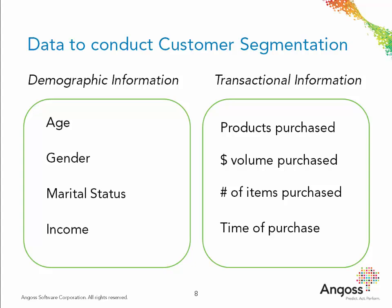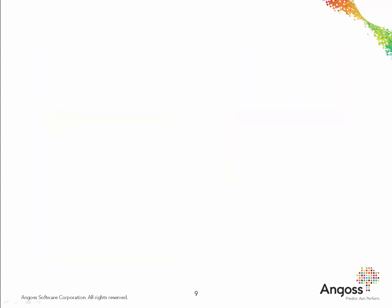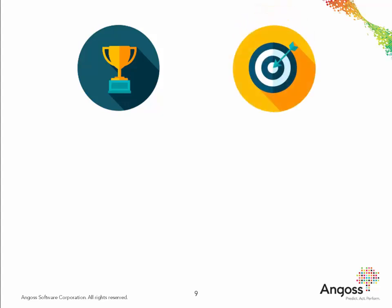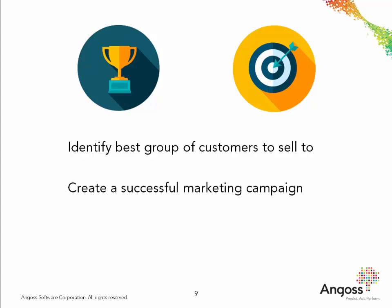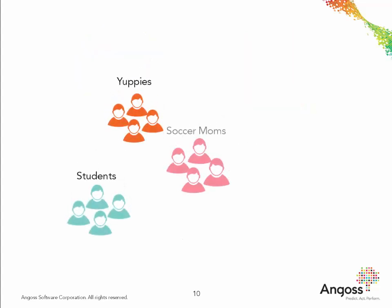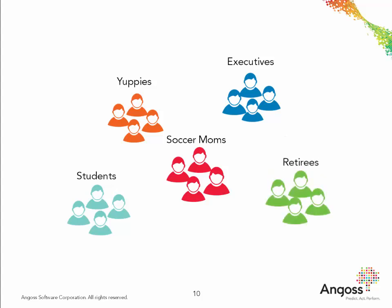Cluster models use these variables to create segments containing customers with similar attributes. In order to have a successful outcome from segmenting customers, the goal needs to be stated upfront. Examples include segmenting data to identify the best group of customers to sell a new product to, creating a successful marketing campaign, or optimizing the sales channel mix.